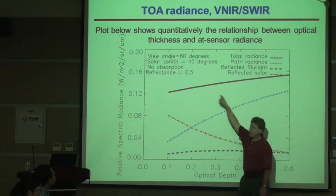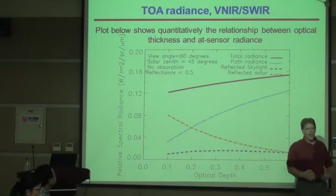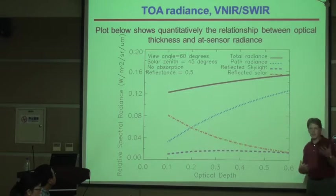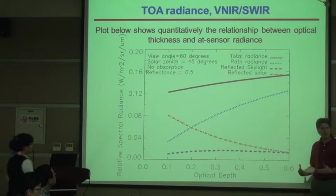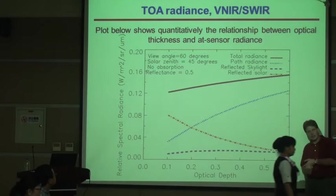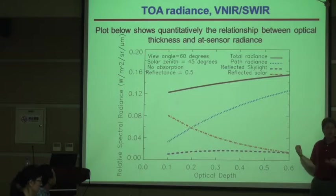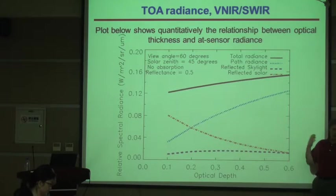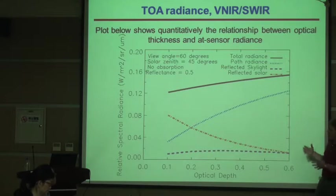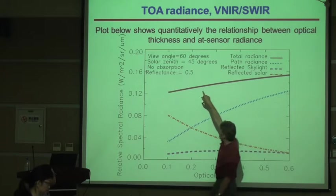In order to have this top-of-atmosphere prediction, we have to know all of the inputs. Everything that Martin was talking about — aerosol optical depths, Rayleigh optical depths, wavelength, surface reflectance, view angle, the geometry of the sun — all of that goes into the code. Here you can see the sun; the view angle is 60 degrees.